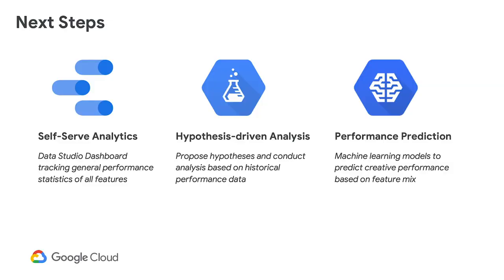Our next steps: the first thing we've started working on is building a self-serve analytics dashboard — a client-facing dashboard with all their creatives and all the available features in tabular and graphical views, so they can get a sense of the feature mix of their portfolio. We can then use this to inform further hypothesis-driven analysis based on historical performance. Finally, we're exploring building a machine learning model to predict performance based on feature mix. We're really excited about this tool — it's going to offer tons of new insights and inform our creative development process.